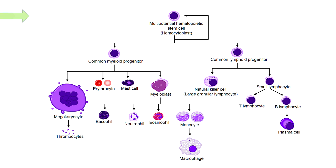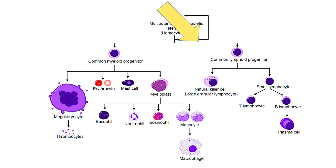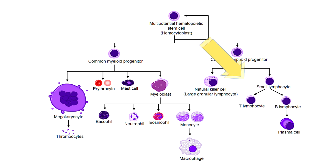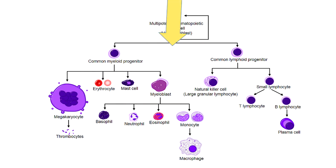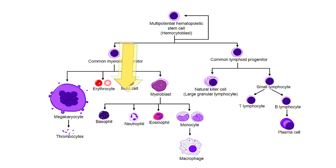In your bone marrow, pluripotent stem cells are rapidly dividing. Some of them will differentiate and progress down the lymphoid line, eventually becoming either B or T lymphocytes. Alternatively, pluripotent stem cells might differentiate and eventually become red blood cells, platelets, or any of the other white blood cells such as neutrophils or monocytes.